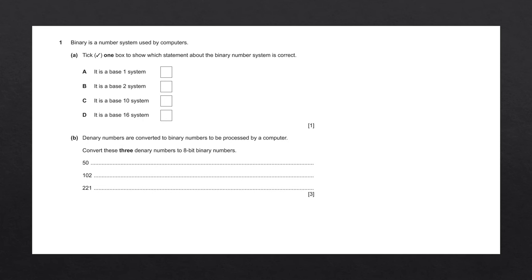Question 1. Binary is a number system used by computers. Question A says tick one box to show which statement about the binary number system is correct. Either it is a base 1 system, a base 2 system, a base 10 system, or a base 16 system.